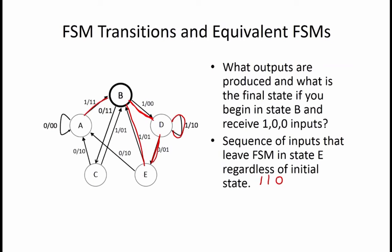So we have one state left to check, and that is state C. From state C, the sequence 1, 1, 0 takes us to state B, then D, then E. So once again, the sequence 1, 1, 0 works.